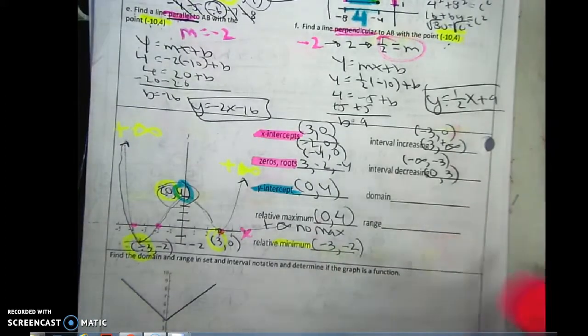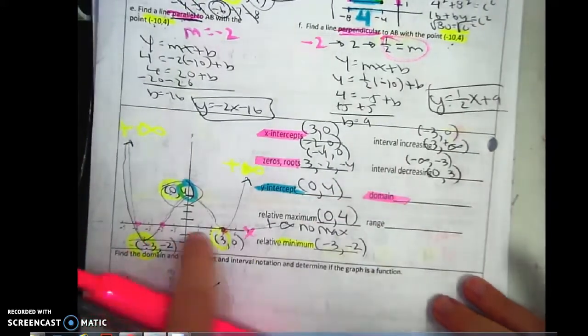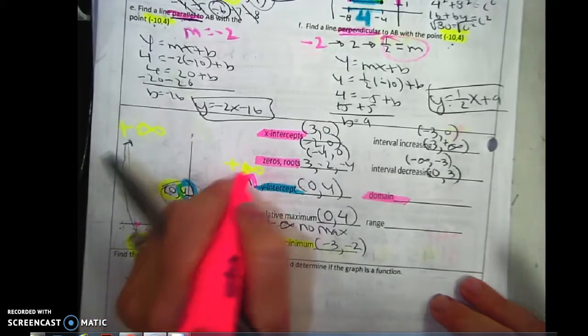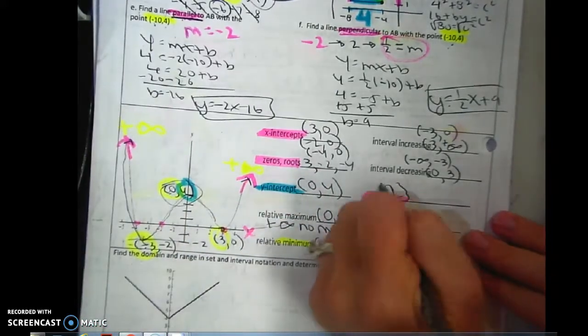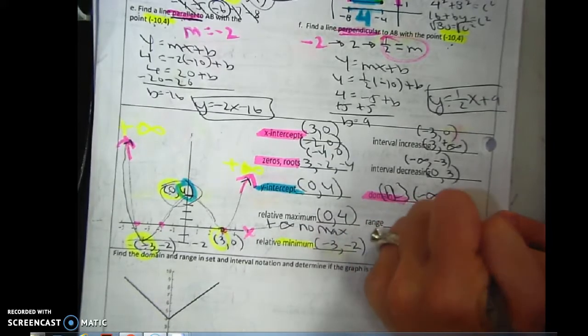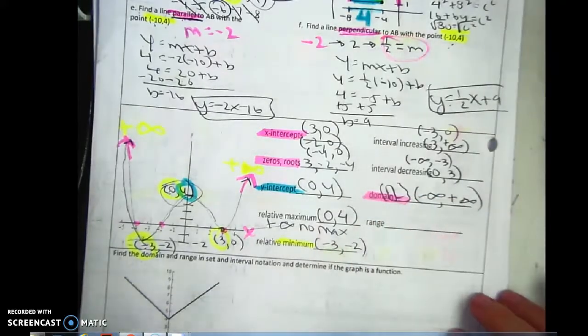Domain. Domain is everything to the right and everything to the left. Well, it's pointing to the right and it's pointing forever to the left. All real numbers, negative infinity to positive infinity.